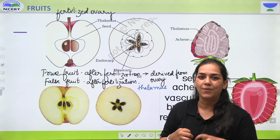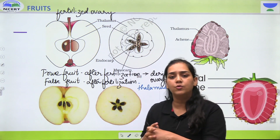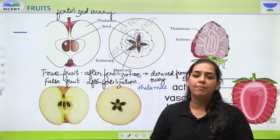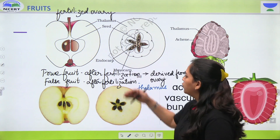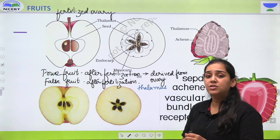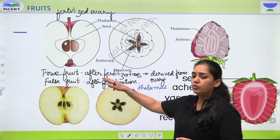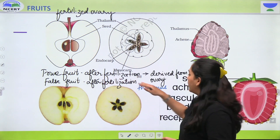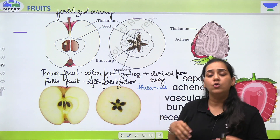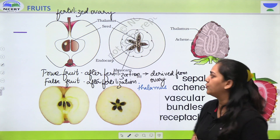Toh false fruit mein woh edible form mein convert ho jata hai. Toh dono bante fertilization ke baad hi hai, but jab poora ovary fruit ban jaye toh usse aap bulaoge true fruit, aur jab jo edible part hai woh thalamus se derive ho, usse aap bulaoge false fruit.